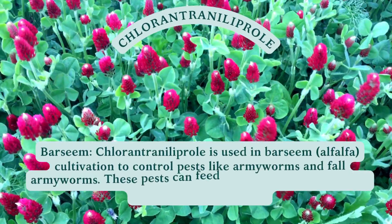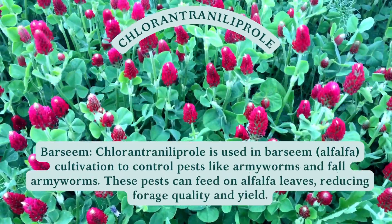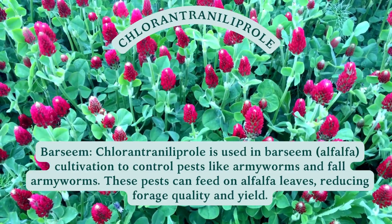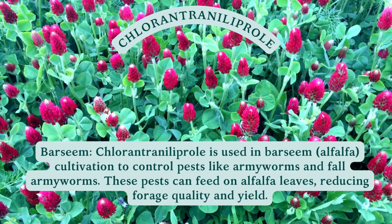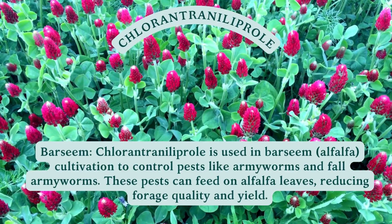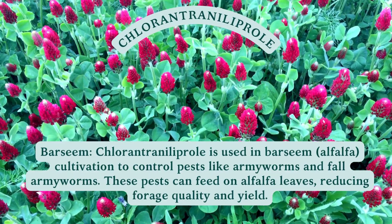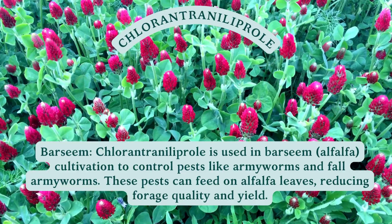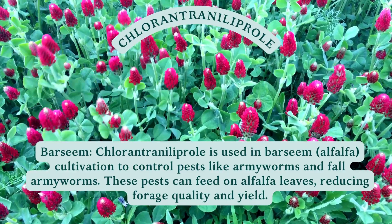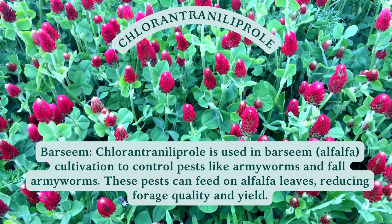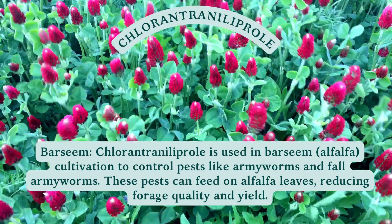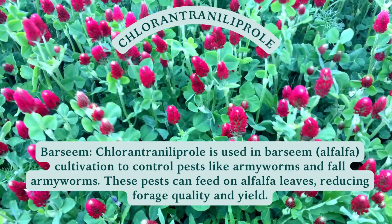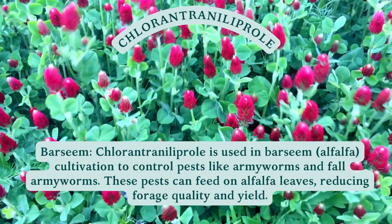Berseem: Chlorantraniliprole is used in berseem (alfalfa) cultivation to control pests like armyworms and fall armyworms. These pests can feed on alfalfa leaves, reducing forage quality and yield.